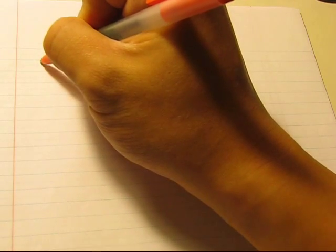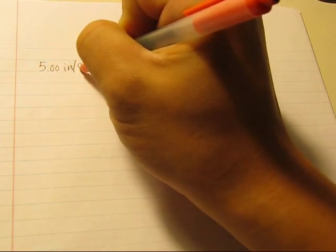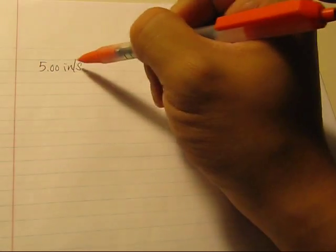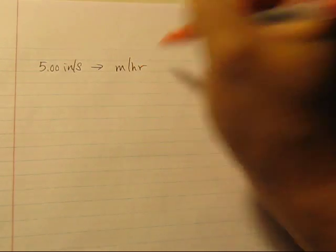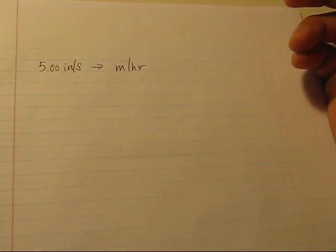Now, this tutorial shows you how to change two units in a single calculation. So let's say you have something like five inches per second. It's a speed because you have distance over time. And you want to change it to meters per hour. So how would you do that?